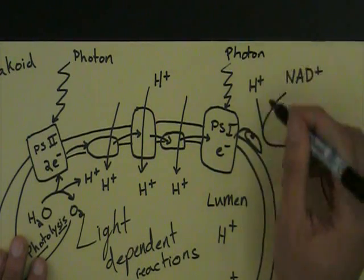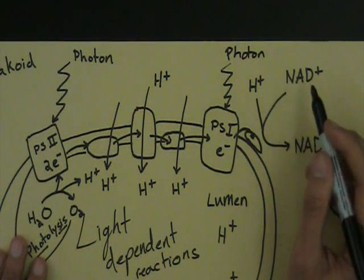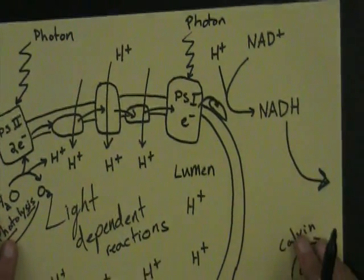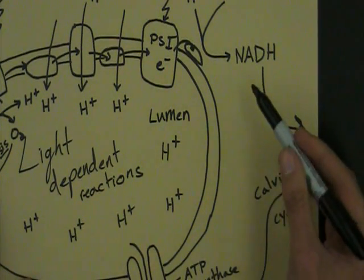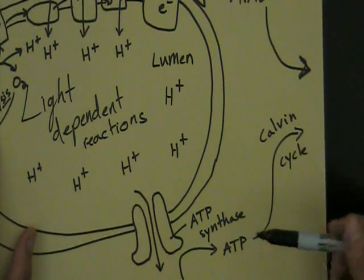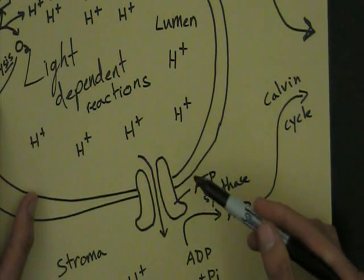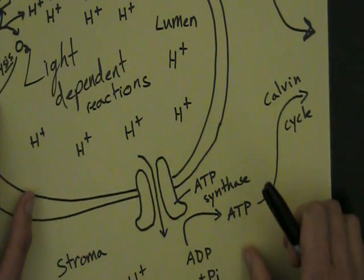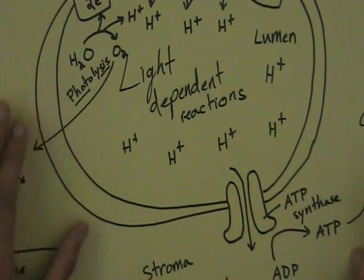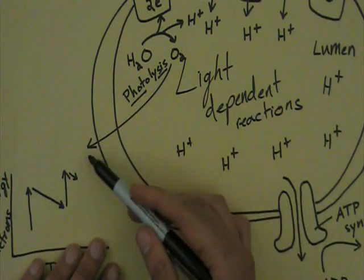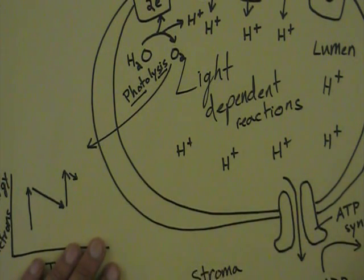They are passed on to an enzyme which binds them with NAD+ and H+, forming NADH. It is really critical that you know that NADH is produced here, and ATP is produced here by the ATP synthase as a result of hydrogen ions moving down their concentration gradient. Remember as well, molecular oxygen is produced and released, which is very useful for us.